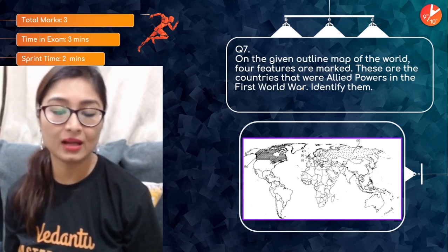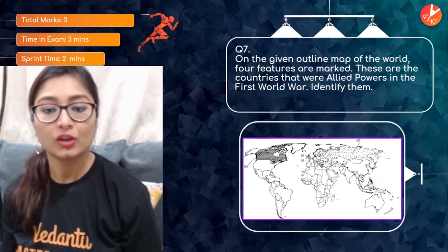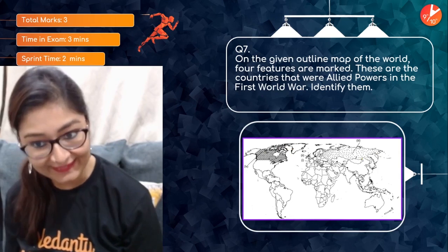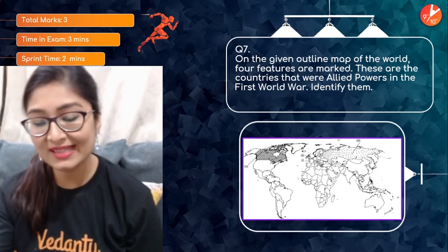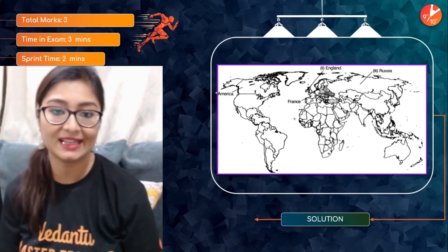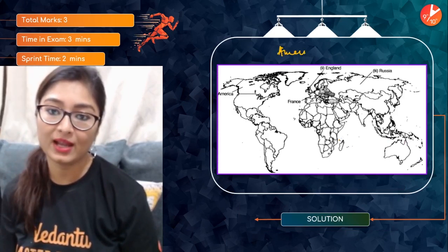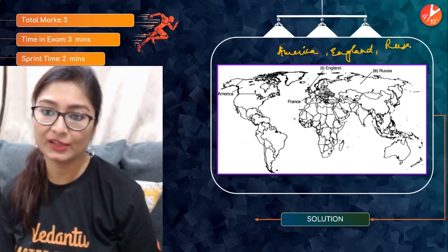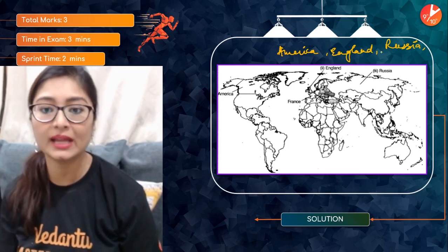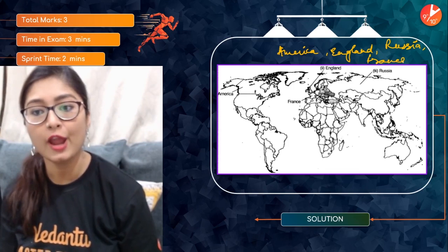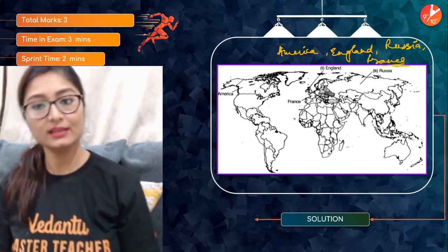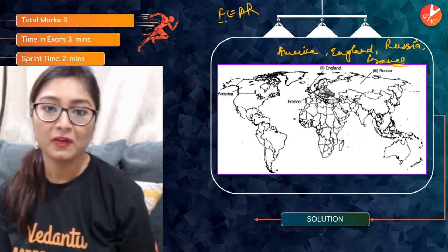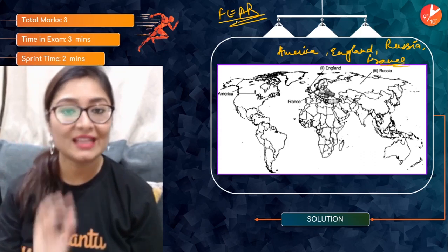For the Allied Powers question, the four countries to identify are: 1 — America, 2 — England, 3 — Russia, and 4 — France. If you remember the basic world map, identifying them is straightforward. These are our Allied Powers, and this completes the 3-mark question.